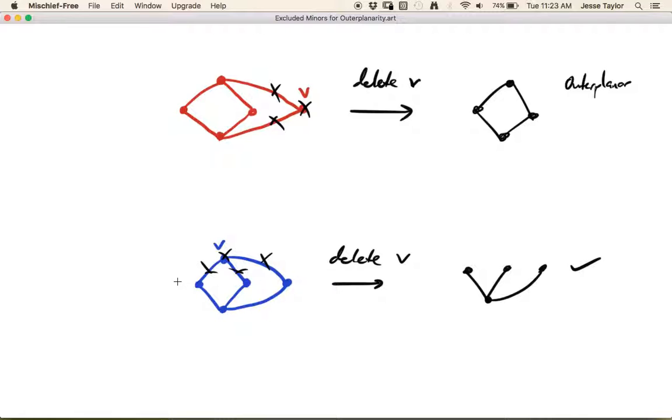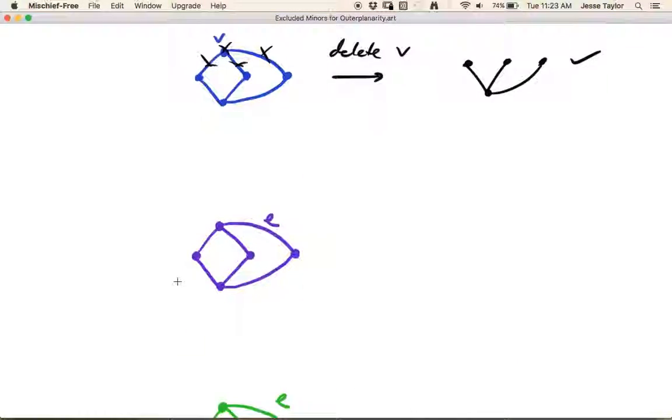So if we delete a vertex, no matter how we delete it, we're going to become outer planar. So it's minimal in that sense. Now we just have to check about deleting edges and contracting edges.